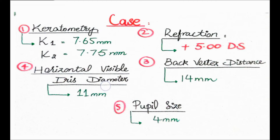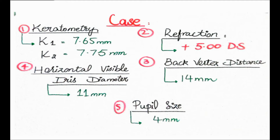You have also measured the horizontal visible iris diameter, which is the distance from the temporal limbus to the nasal limbus of the single eye - in this case 11 millimeters. After calculating the pupil size, which is the distance from the pupillary margin of the temporal side to the pupillary margin of the nasal side of the single eye, you have noted it as 4 millimeters.